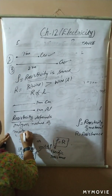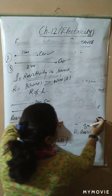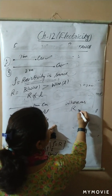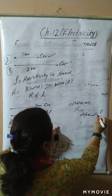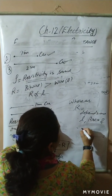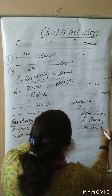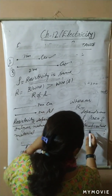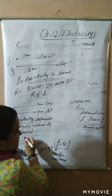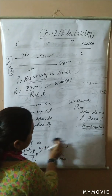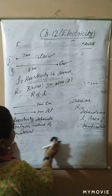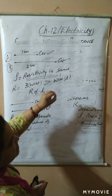Whereas resistance depends on length, area, and also temperature — though the temperature factor is not covered in 10th class. If you increase the temperature, resistance increases and resistivity also changes. We assumed constant temperature in this discussion, so you will read about the temperature relation in senior classes. This is all about resistivity and resistance.